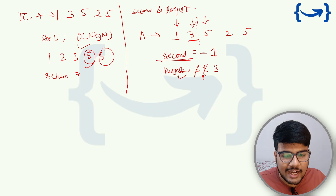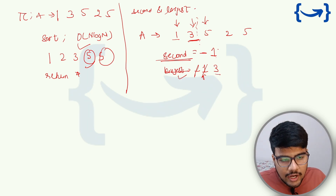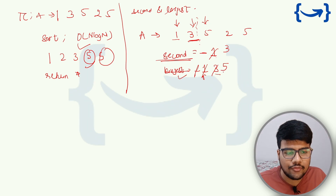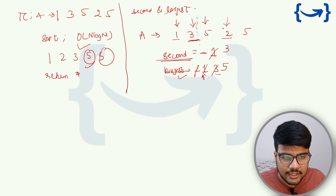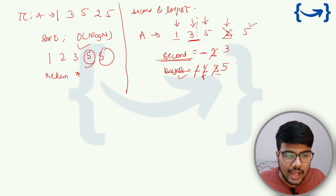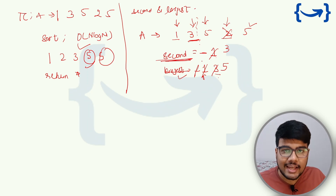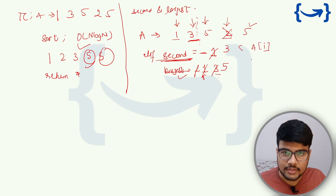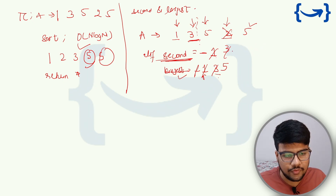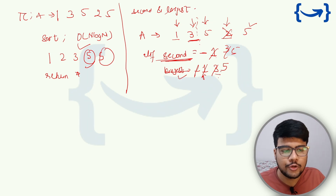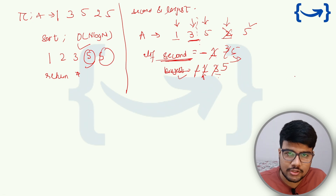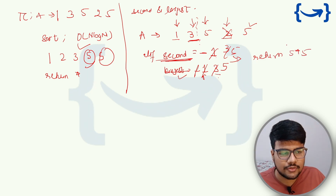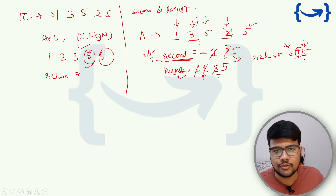Continuing: see 5 — 5 is greater than `firstMax` (3), so set `secondMax = 3`, then `firstMax = 5`. See 2 — 2 is not greater than `firstMax` (5). Check the else-if: is 2 greater than `secondMax` (3)? No. See 5 — 5 is not greater than `firstMax` (5), check else-if: is 5 greater than `secondMax` (3)? Yes, so `secondMax = 5`. After the loop, `firstMax = 5`, `secondMax = 5`. Return `firstMax × secondMax = 25`. This solves the problem optimally.